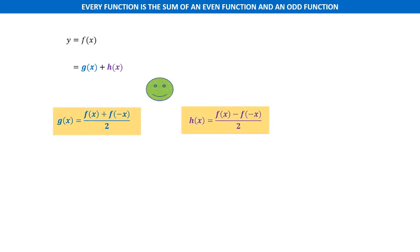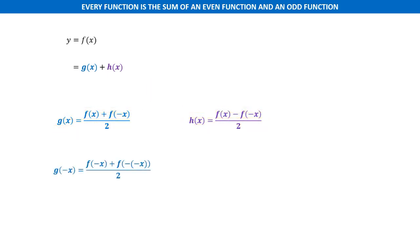Can you believe that g(x) is an even function and h(x) is an odd function? Let us verify it. Substituting x by −x in g(x), we get f(−x) plus f(−(−x)) all divided by 2, which further reduces to f(x) plus f(−x) all divided by 2, which is equal to g(x). This implies g(x) is an even function.